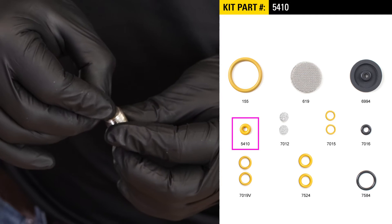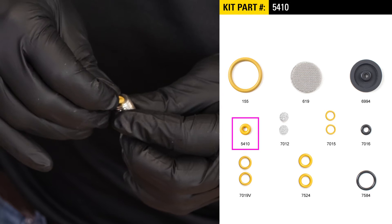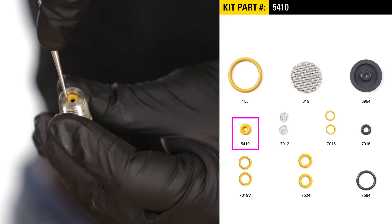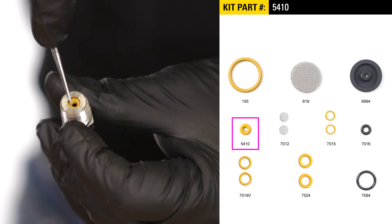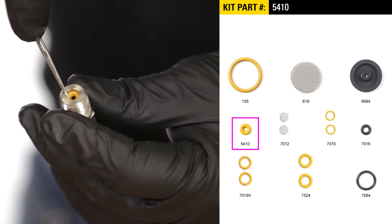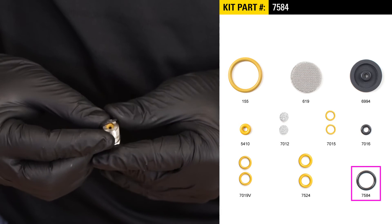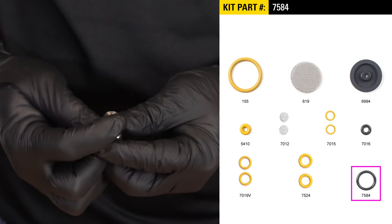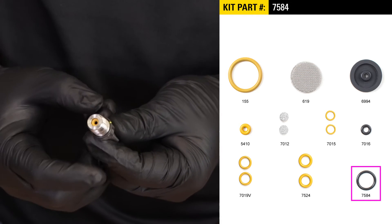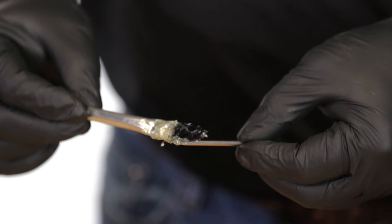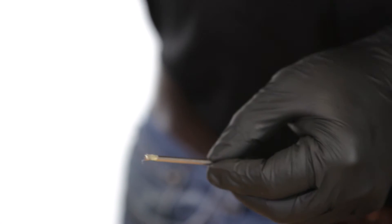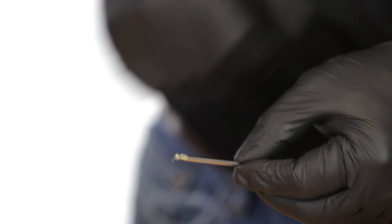Begin by inserting the 5410 O-ring into the override fitting. Next, put the 7584 O-ring around the outside of the override fitting. Install the stem and spring, adding grease to the tip of the stem to protect the O-ring as you install the stem.